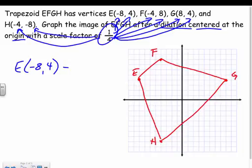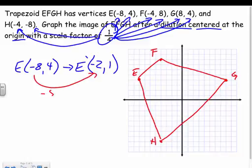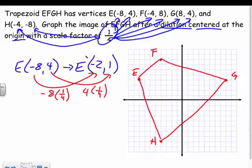Take one-fourth times all of these. For example, if E is negative 8, 4, E prime—well, what's one-fourth of negative 8? Negative 2. What's one-fourth of 4? 1. All I did was multiply negative 8 times one-fourth, which was negative 2, and I took 4 times one-fourth, which is 1. Hopefully by this point in geometry we're pretty good at taking a fourth of a number.